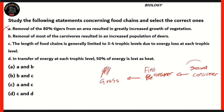If we remove 80 percent of tigers, the number of first consumers will increase. As first consumers increase, they eat more grass and plants, so vegetation will decrease — not increase. So statement A is incorrect. This allows us to cancel options A and C from the answer choices, since both of them include statement A as correct.